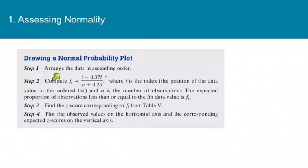Step one would be to take your dataset and arrange the data in ascending order, and remember this will be a small dataset, less than 30 values for sure. Step two would be to compute f sub i, which is computed by doing i minus 0.375 over n plus 0.25, where i is the index or position of the data in the ordered list, and n is the number of observations. f sub i is the expected proportion of observations less than or equal to the ith data value. This is like the area to the left of the z-score. We go to our z-table and use it to find the corresponding z-score, then plot the observed values on the horizontal axis and the corresponding expected z-scores on the vertical axis.